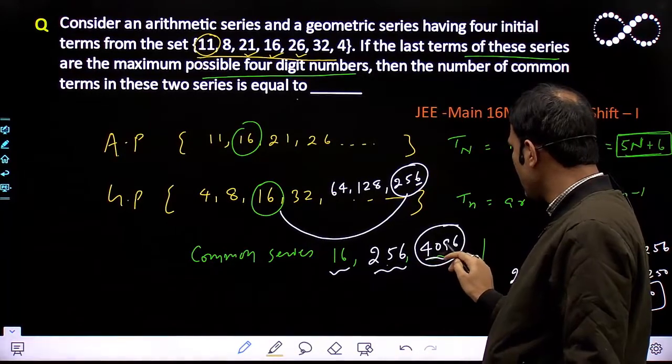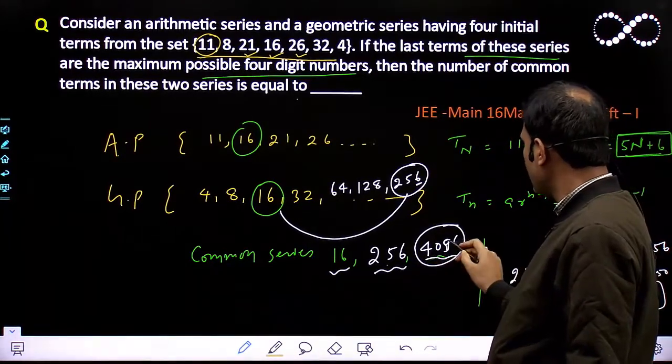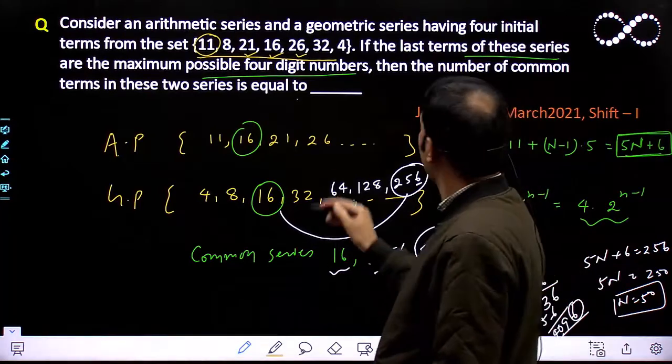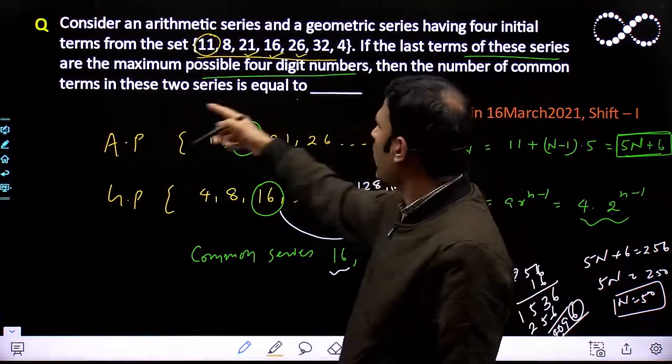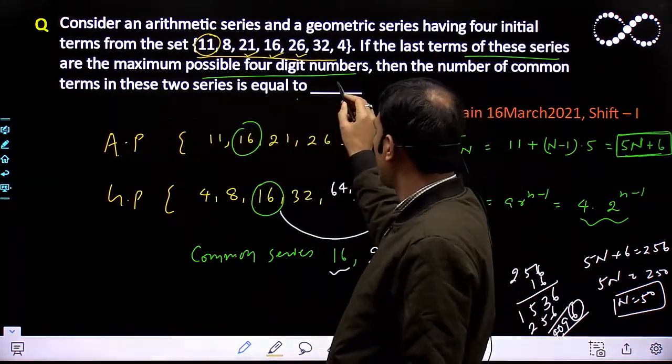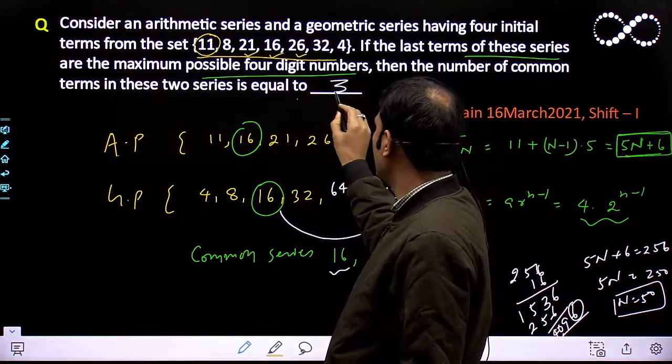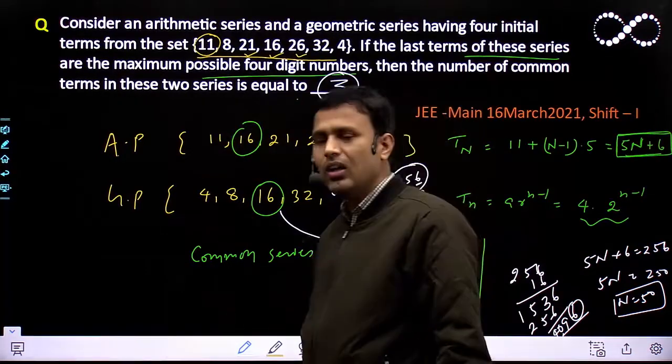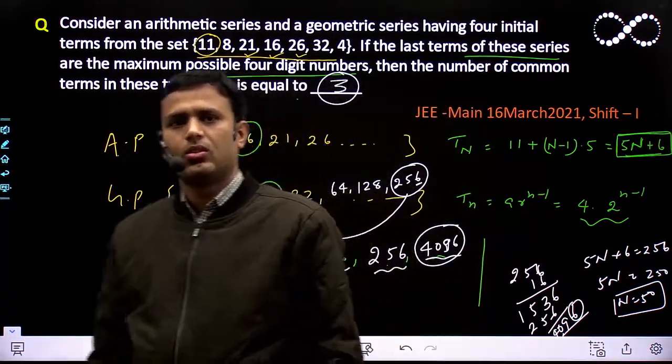The first term of the common series is 16, then 256, and 4096. So how many terms are in this? Three. The answer for these two series is equal to 3. Three is the correct answer. Okay, thank you.